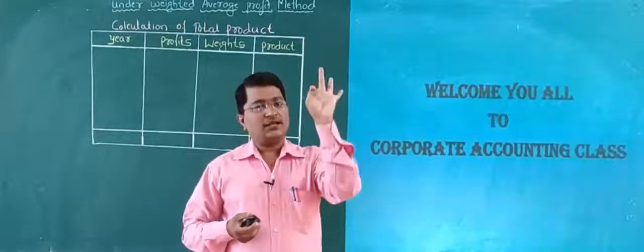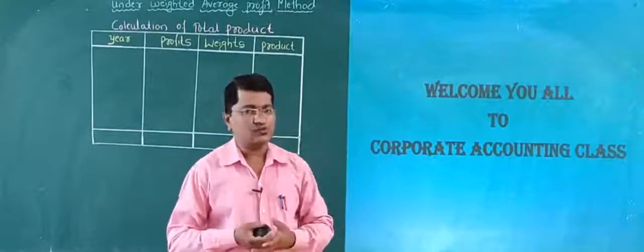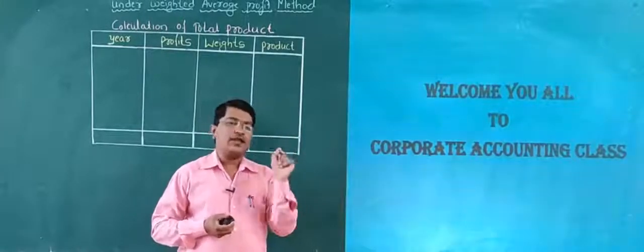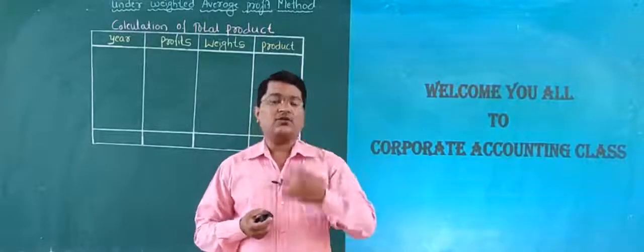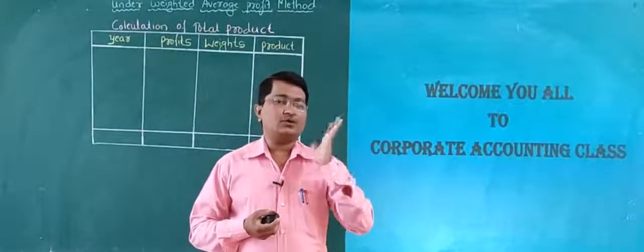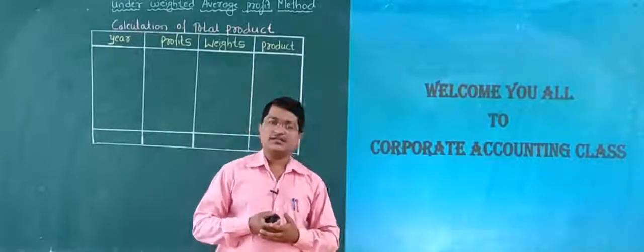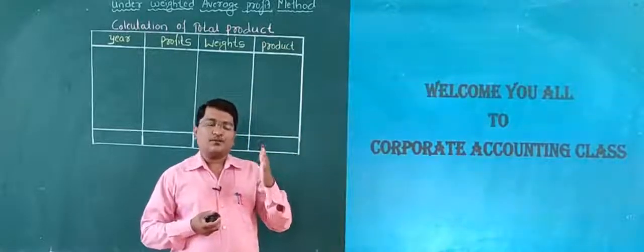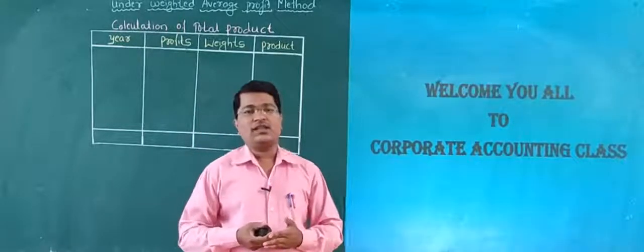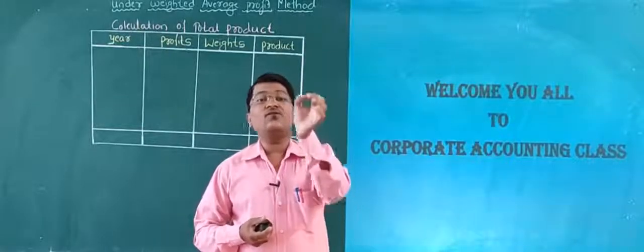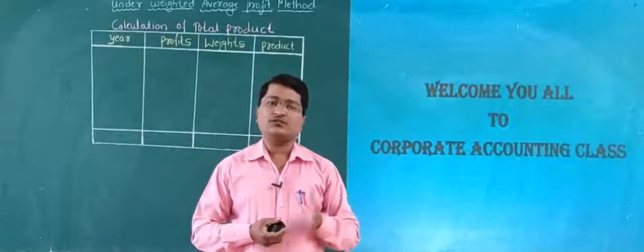The three methods for valuation of goodwill are: one, average profit method; two, super profit method; and three, capitalization method. Under average profit method, there are two sub-methods: simple average profit method and weighted average profit method. Today we are going to learn how to calculate goodwill under weighted average profit method.